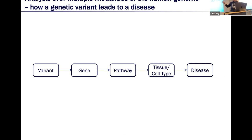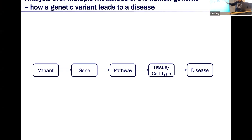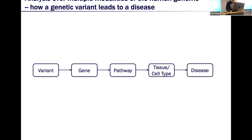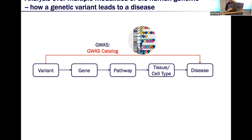For this question, I will use this diagram: first from variants to genes, then from genes to pathways, then to tissues and cell types, and finally to diseases. So we have to use different data from data consortia and their databases to find the relationships between those modalities. For example, we have the correlation between variants and diseases from the human population, which we can obtain from the GWAS Catalog.